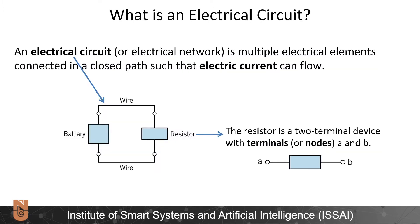What's an electrical circuit? An electrical circuit, also called an electrical network, is multiple elements connected in a closed path such that electrical current can flow. A very simple electrical circuit is shown here: we have a battery connected via a wire to a resistor, and the resistor is connected back to the battery with another wire, closing the whole loop.